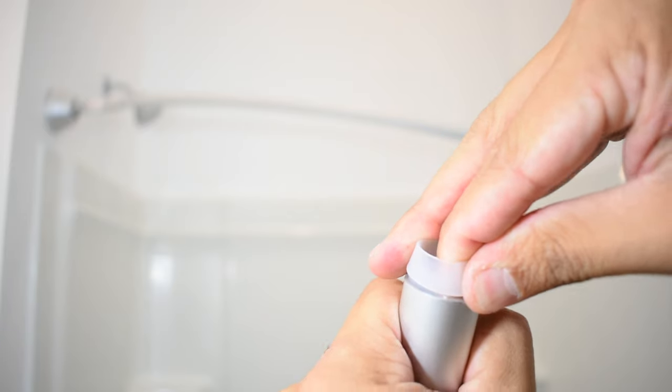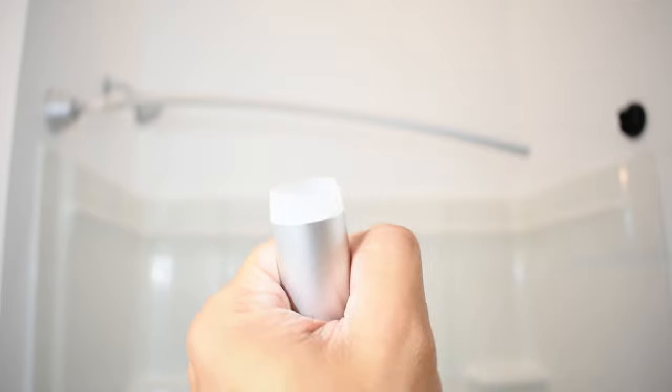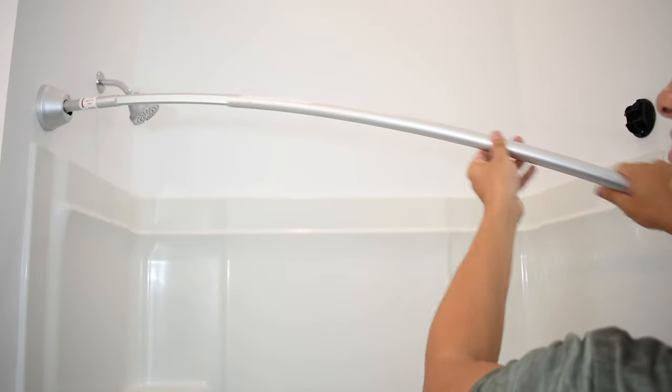Grab the other half of the rod, take this plastic piece and put it in the rod making sure the flat parts are down and they align. Then slide this half of the rod over the other rod. Again making sure the flat part's down.